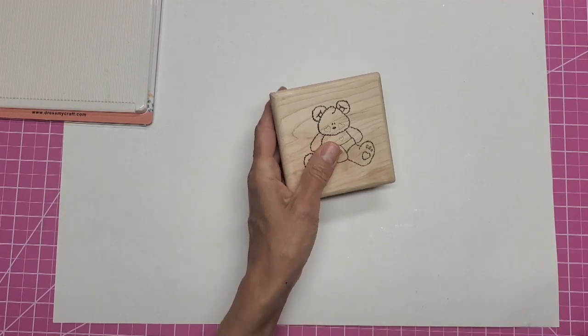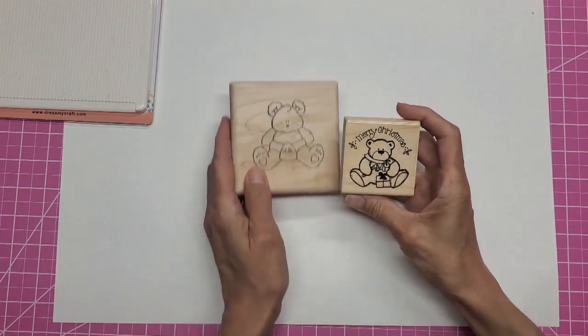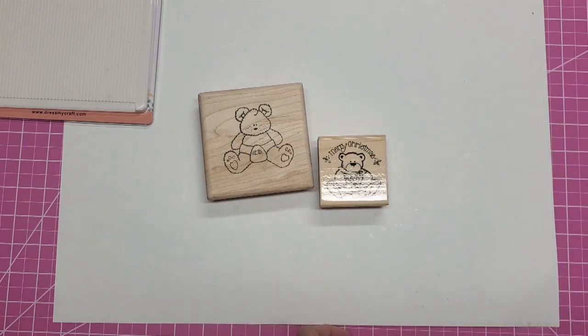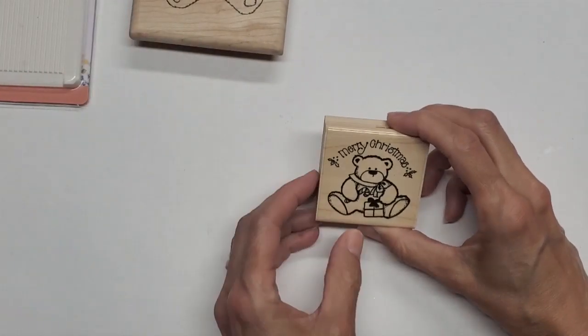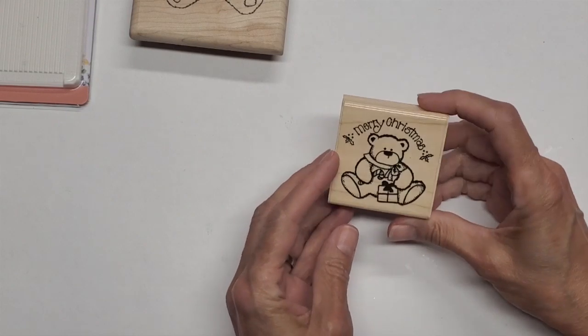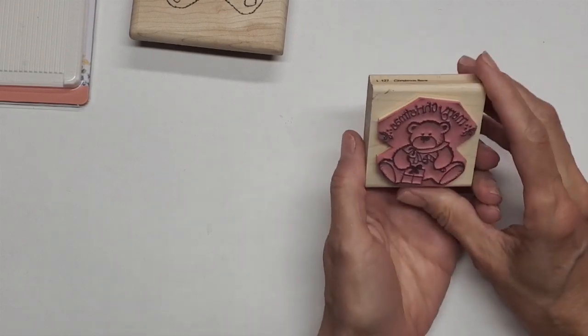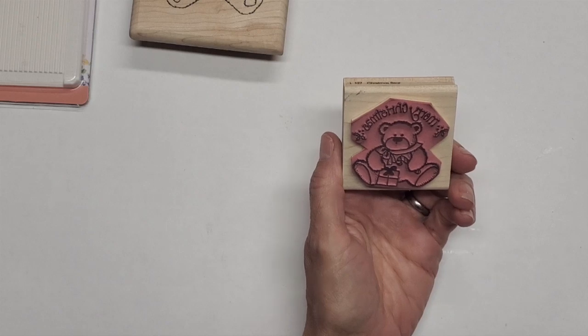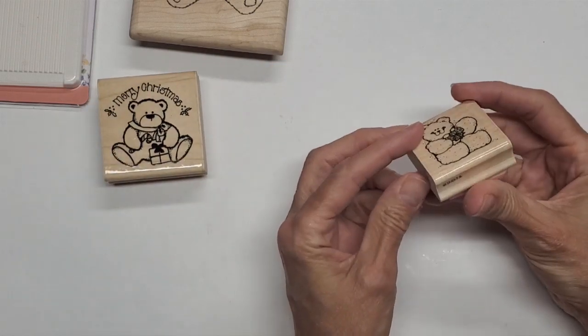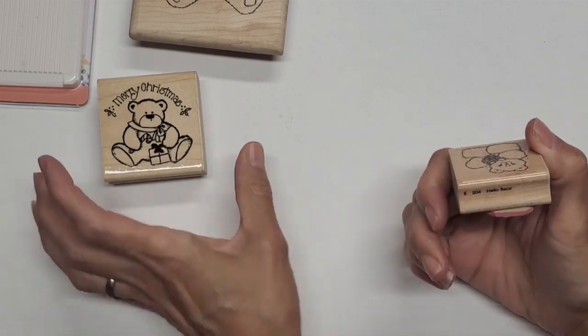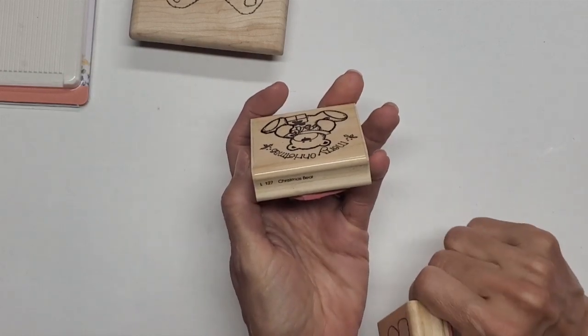This one is a teddy bear that says Merry Christmas. Let me zoom in a little bit so you can see these guys better. He says Merry Christmas. This is an old Dots stamp from 1989. This one also is a Dots stamp, it doesn't have the year on this one. It's E20204 Hello Bear.